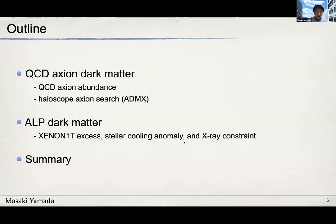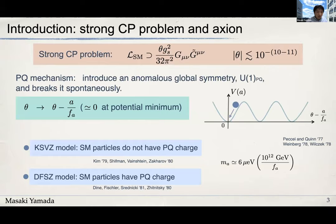The axion is introduced to solve the strong CP problem. We can write down this Lagrangian in the standard model Lagrangian. This parameter theta is a CP violating phase, and this term predicts a non-zero neutron EDM. We have a strong upper bound on the neutron EDM, so we have a very stringent constraint on this parameter theta.